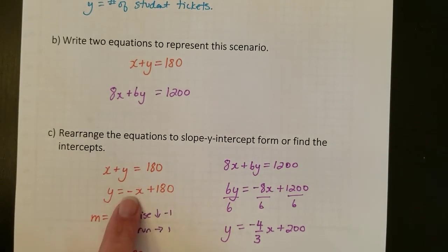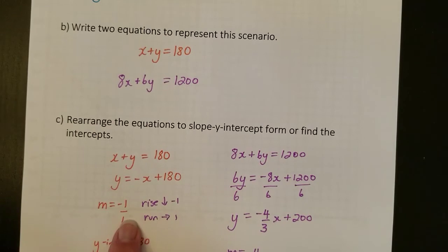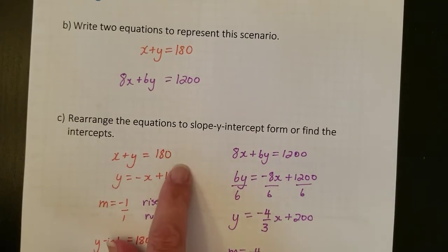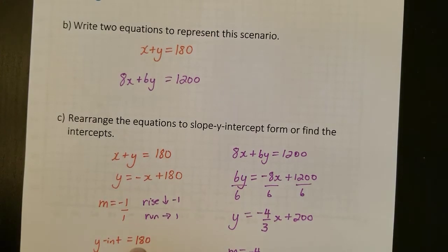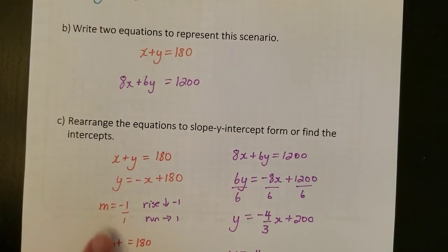So from here, I see that my slope is the coefficient of the X, and there's no number there but just a negative sign. So I know that that's negative 1 over 1. And the Y-intercept is the number added or subtracted by itself. So the Y-intercept is 180. So I'm going to have a slope of negative 1 and a Y-intercept of 180.